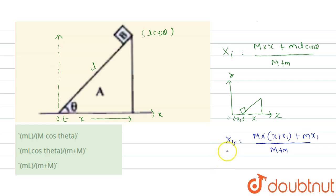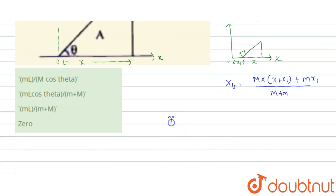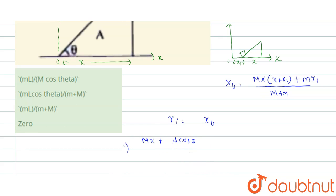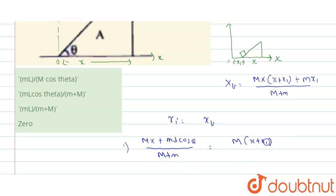Now, as the center of mass does not change and there is no external force, we can write X_initial equals X_final. That implies: capital M times X plus small m times L cos θ, divided by capital M plus small m, is equal to capital M times (X plus X1) plus small m times X1, divided by capital M plus small m.